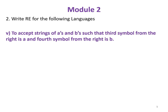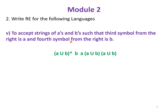Next question is to accept strings of A's and B's such that the third symbol from the right is A and the fourth symbol from the right is B. Starting from the right: the first symbol has no restriction so (A∪B); second symbol also no restriction so (A∪B); third symbol must compulsorily be A; fourth symbol must be B. After that there may be any combinations of A's and B's, represented as (A∪B)*. So the regular expression is (A∪B)* B A (A∪B)(A∪B).